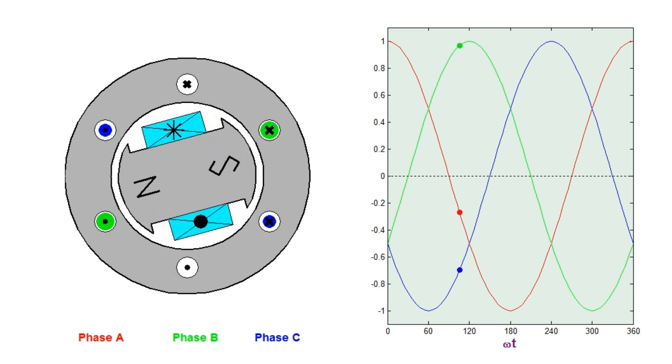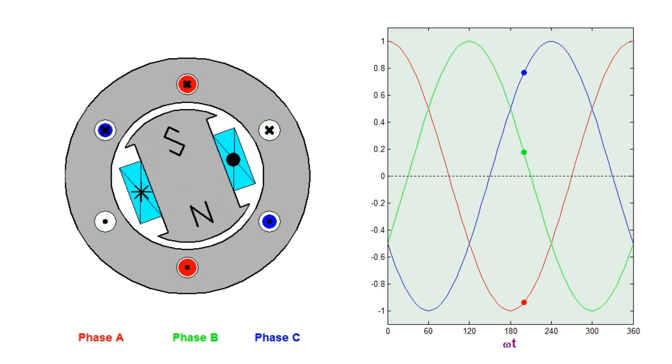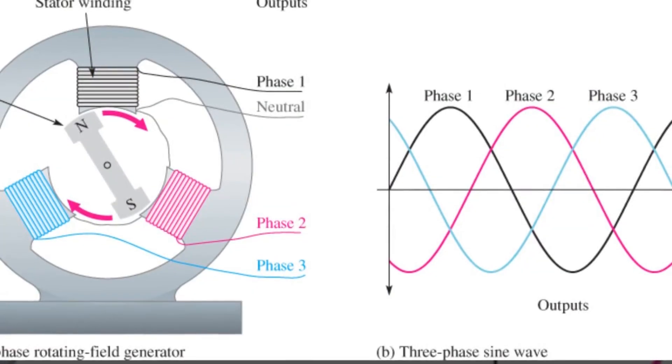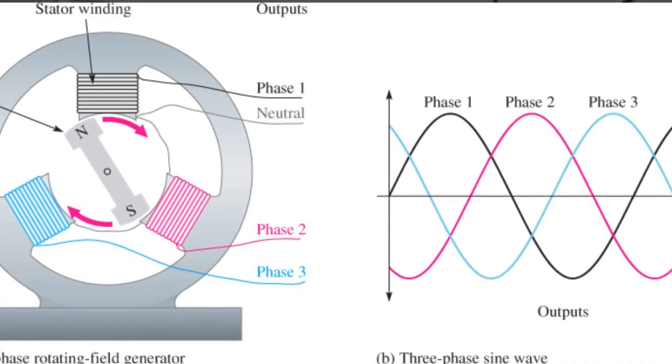The rotor, fed by DC current, rotates synchronously with the frequency of the alternating current it produces, while the stator houses the armature windings where the voltage is induced.